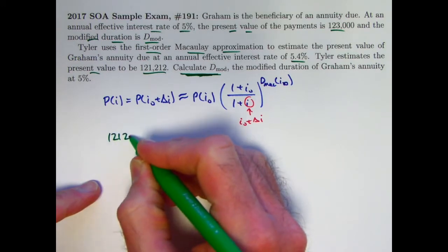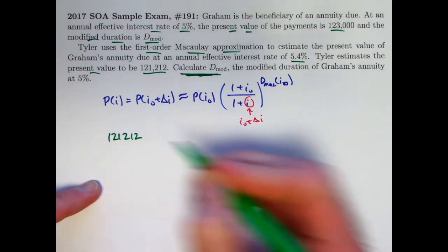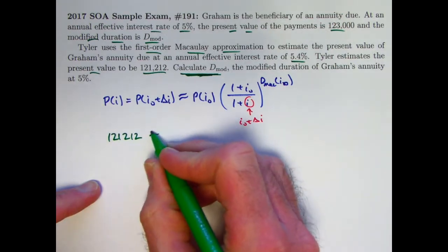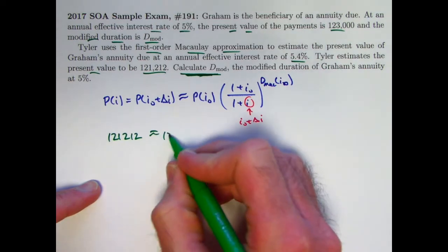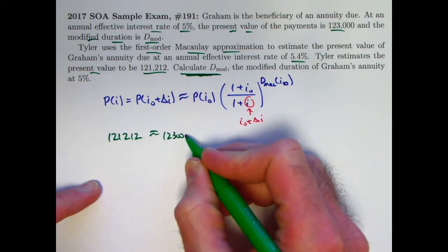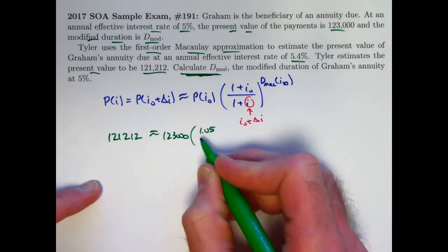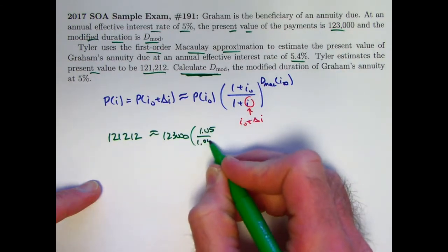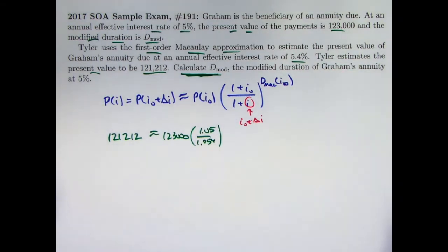What was that mistake that I made? Well, I started correctly. I plugged in 121,212 into the left-hand side. I plugged in the price at the 5% interest rate of 123,000 here, so that was fine. Then I plugged in 1.05 for 1 plus i0, and 1.054 for 5.4%.